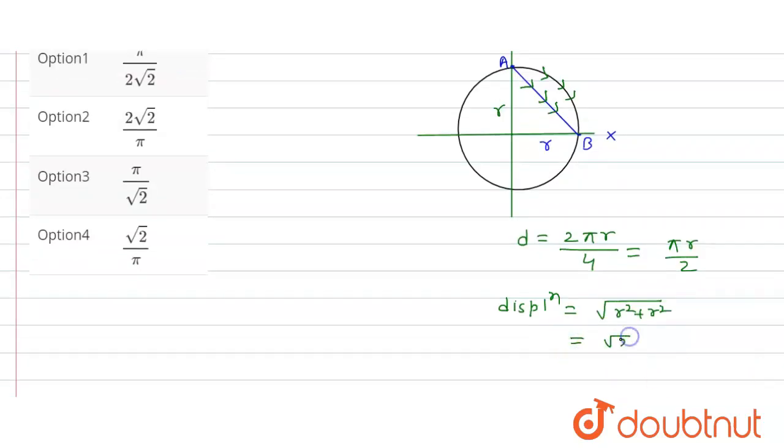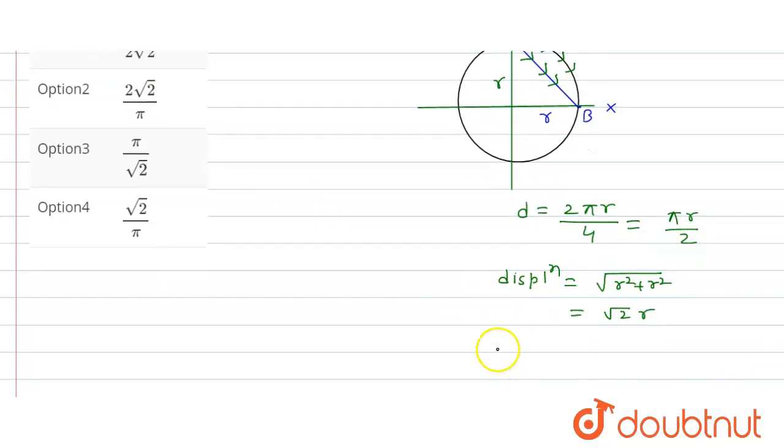Okay, so that is equal to root 2 into r. This is the displacement. So we have to find the ratio, ratio of distance and displacement, that is equal to how much? πr by 2 upon root 2 into r, so r and r cancel.